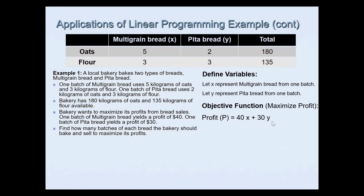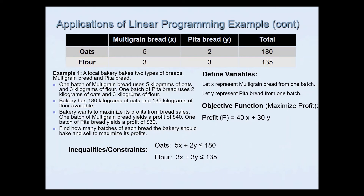We form a system of inequalities. For oats: 5x + 2y ≤ 180, because that's the total available. For flour: 3x + 3y ≤ 135. And the non-negativity constraints: x ≥ 0 and y ≥ 0, since we can have at least zero batches of each type of bread.